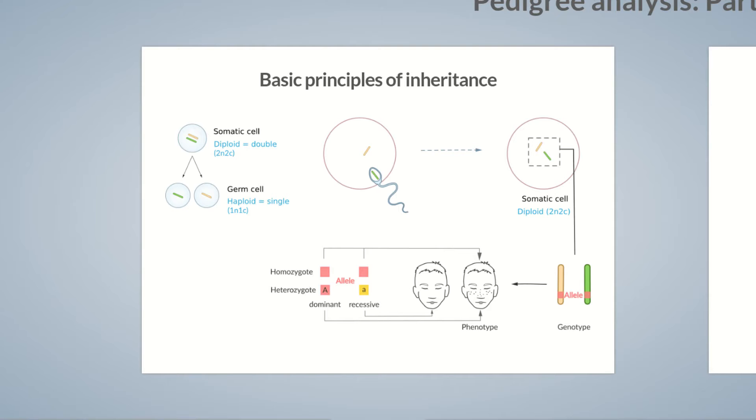Another possibility is codominant alleles, in which both alleles are expressed simultaneously leading to a mixed phenotype. Codominance is a more complex pattern of expression, so to keep things simple, we won't look into it any further.